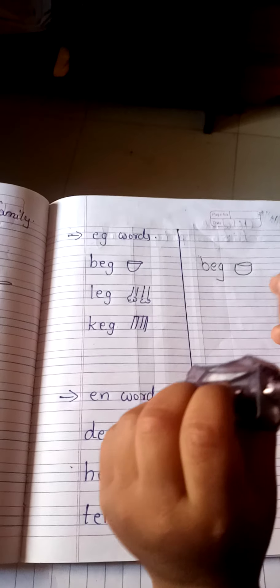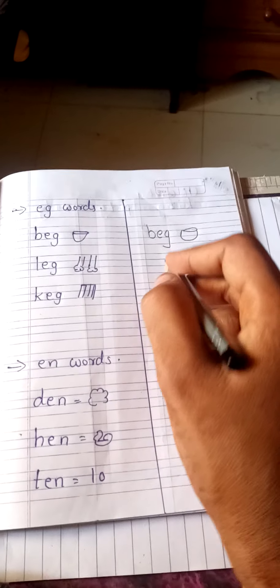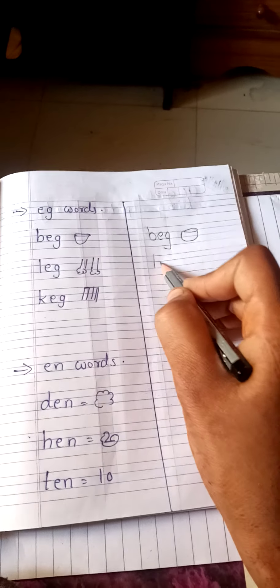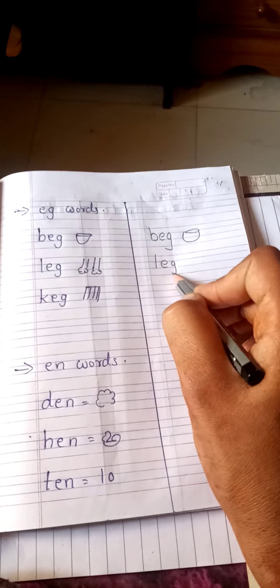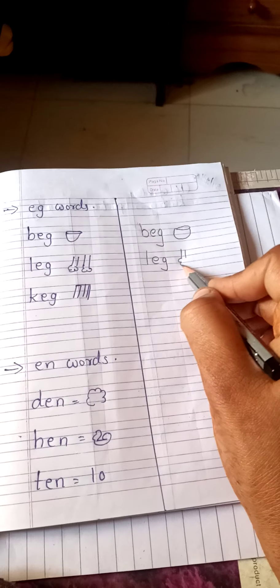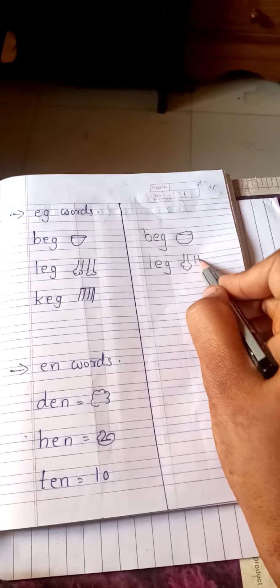Now next, L-E-G, leg. How many legs we have? Two. Okay, so we are going to draw the two legs, small small.